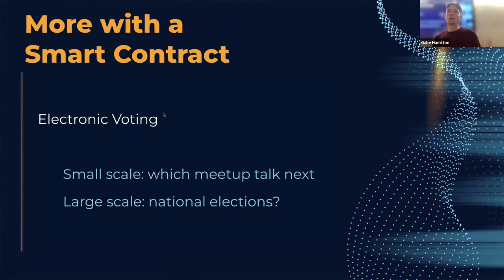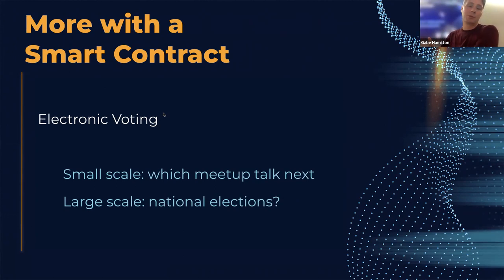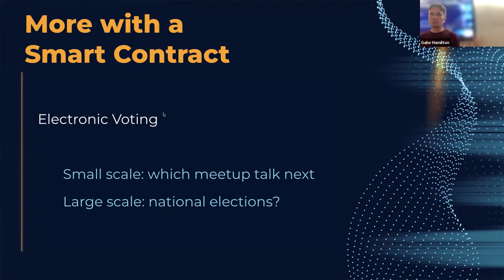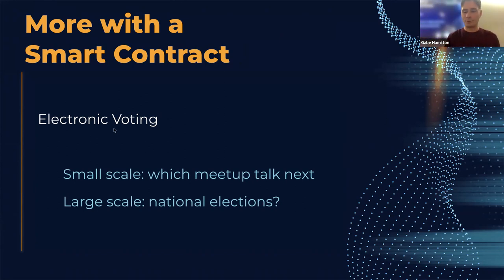We might do some electronic voting, make decisions using a smart contract. That could be a small scale — we could have a contract where we all vote on what should be the next meetup talk. But people use this for larger and larger areas of governance, and there are groups experimenting with this for national elections. So it could be that at some point you know the result right away. You don't have to wait days and days for results to come in.